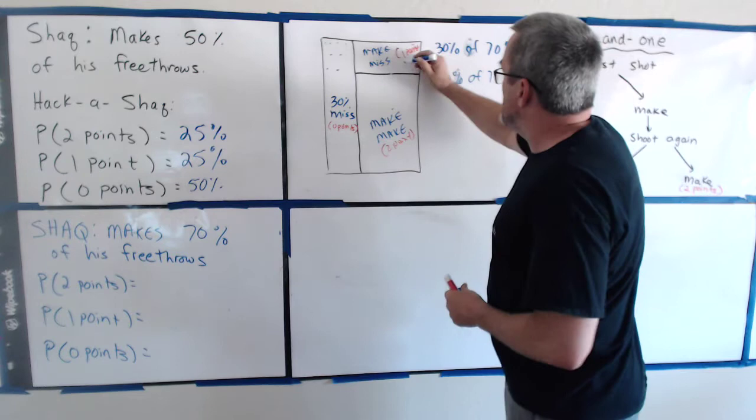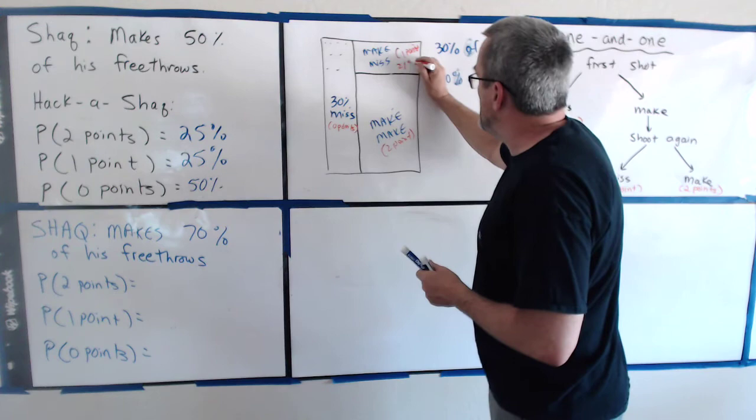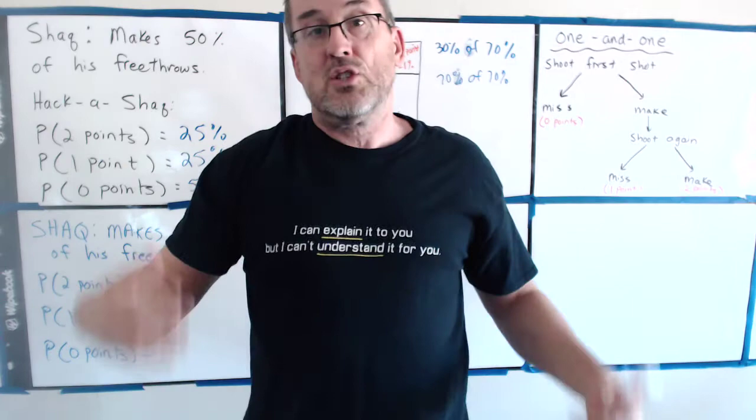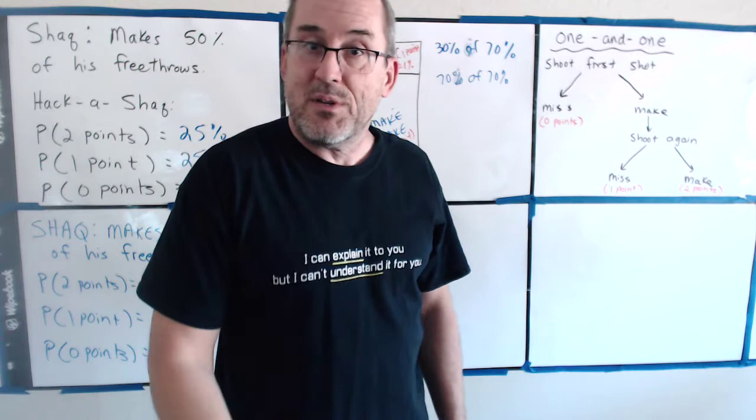And then, kind of similarly here, 70% of 70%. On the 70% time he makes, 70% of those he makes again. So, what's 70% of 70%? Well, let's go 10%. What's 10% of 70%? 7.